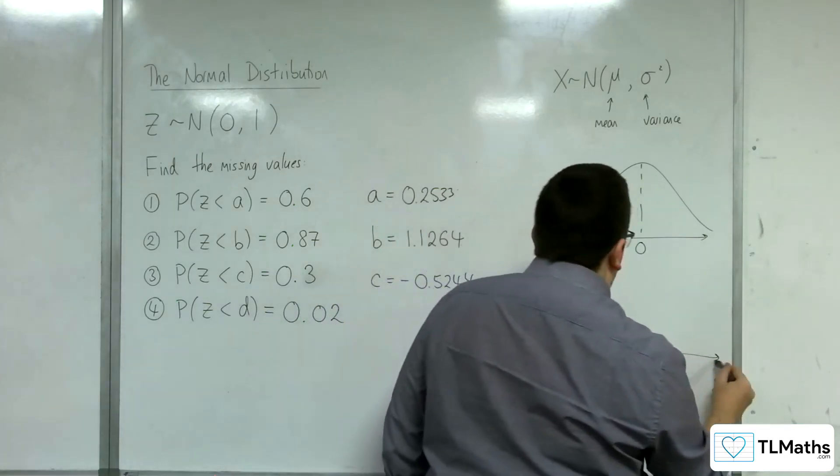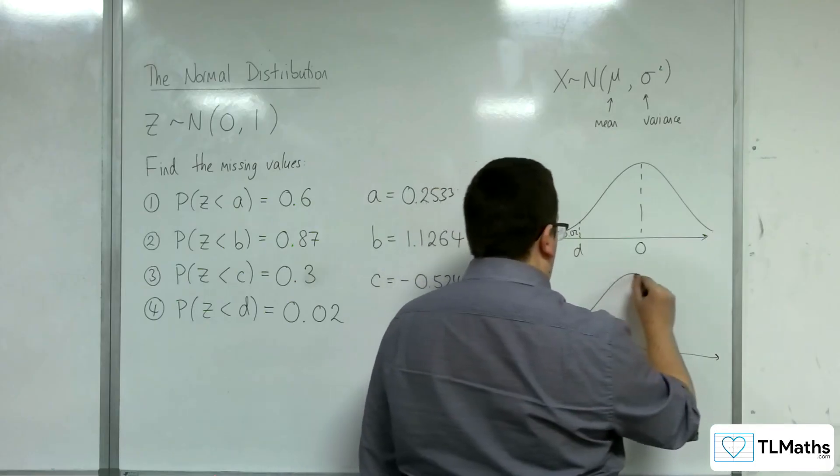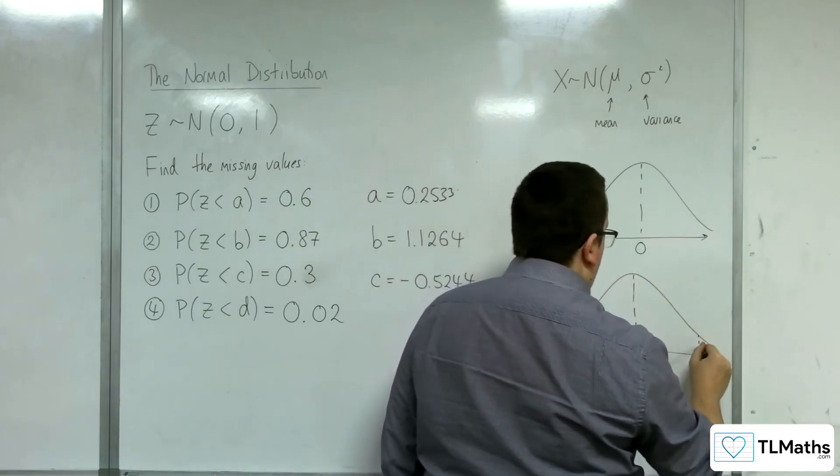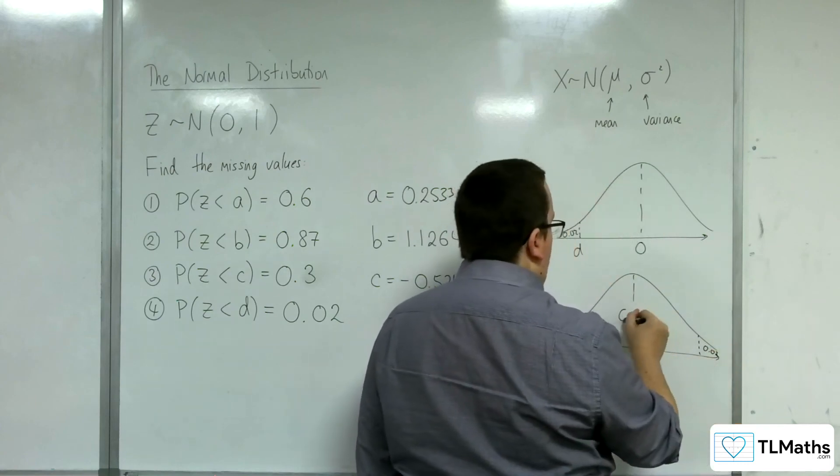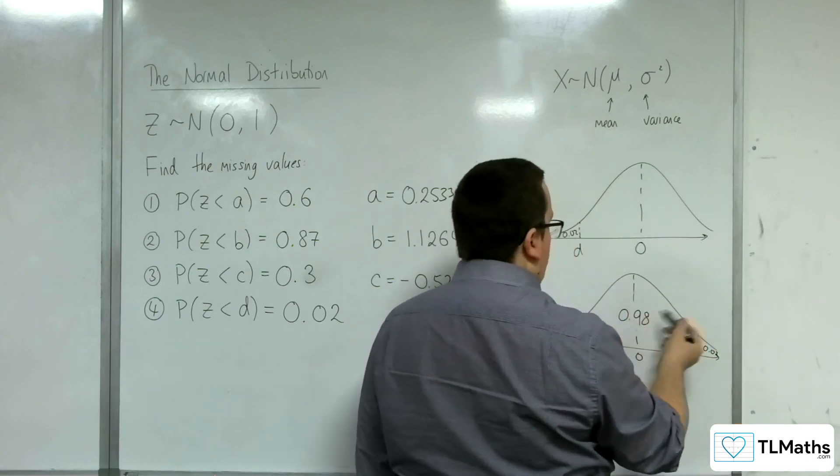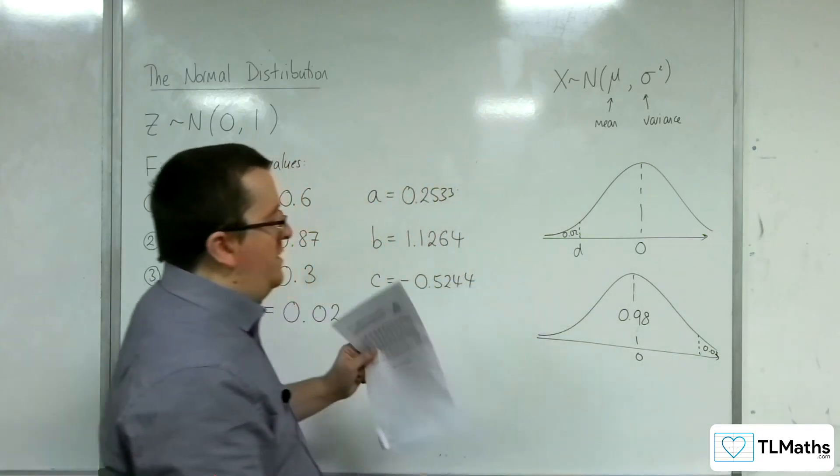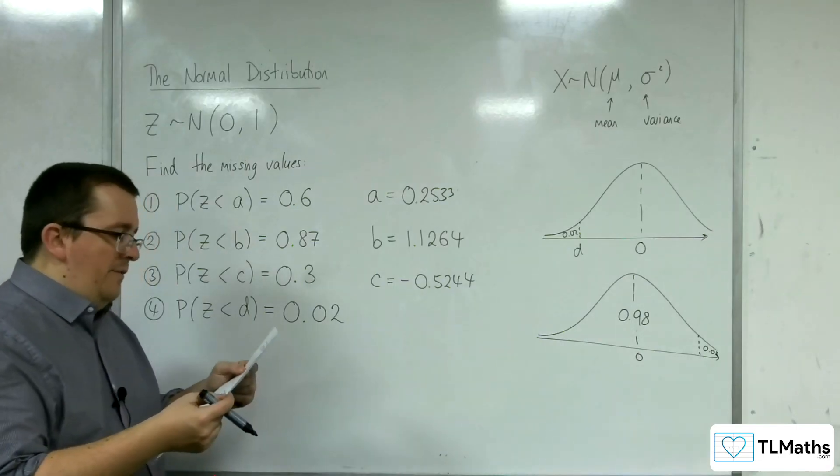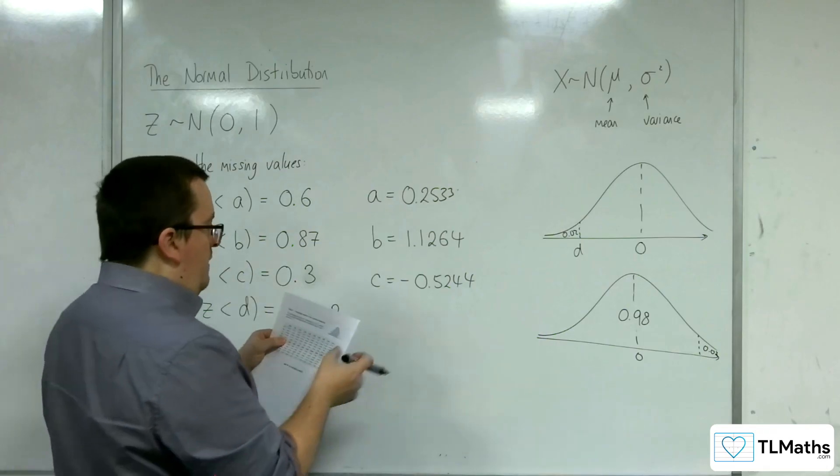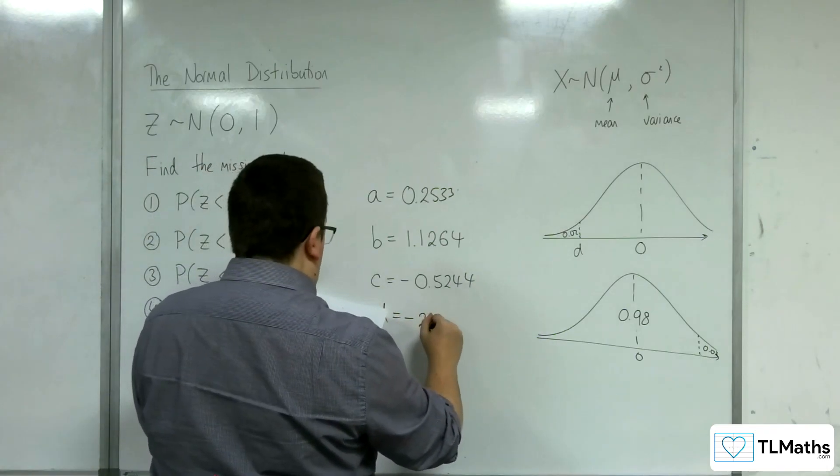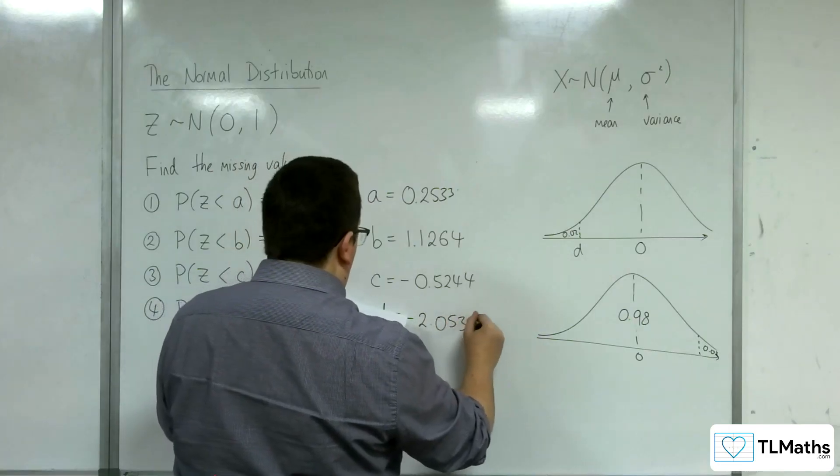So, it would have to be that little bit there. So, I can't look up 0.02. So, we've got to look on the other side. So, that means that this region would have to be 0.98. So, if I look up 0.98, it would be the negative of that value. So, 0.98 is 2.0537. So, D must be minus 2.0537.